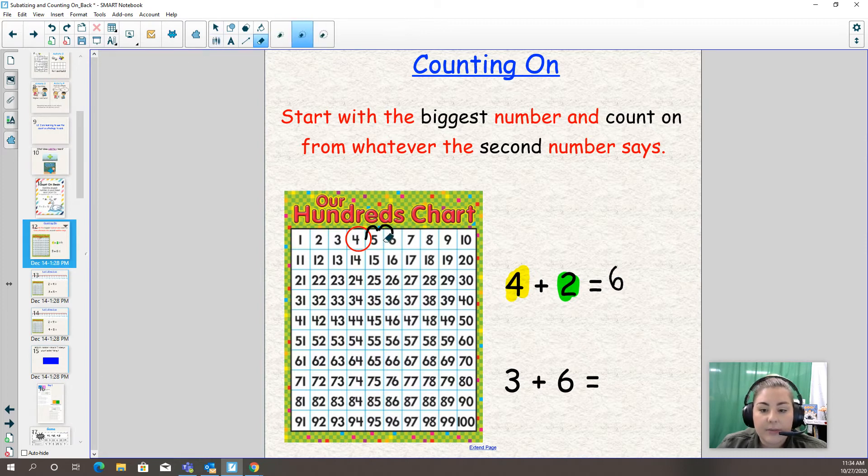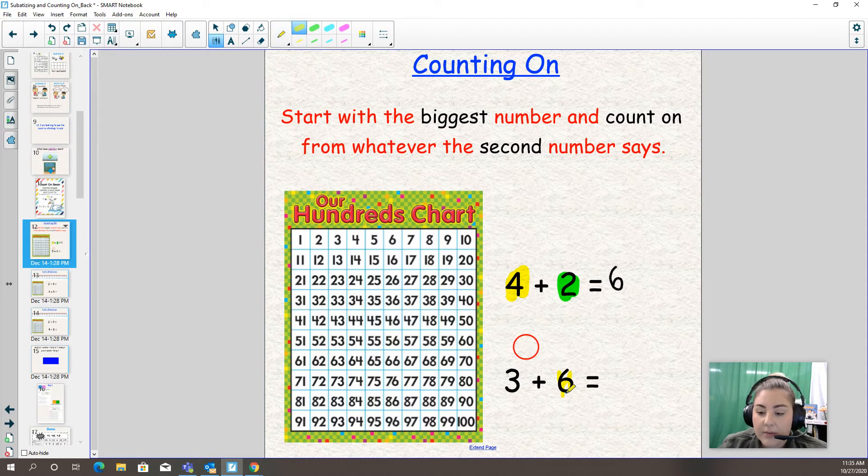Let's try another one. This is my next question: three plus six. Which one's the bigger number? I'm going to highlight it in yellow. The bigger number is six. That's right.